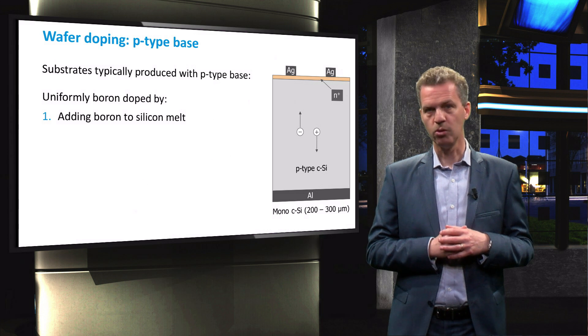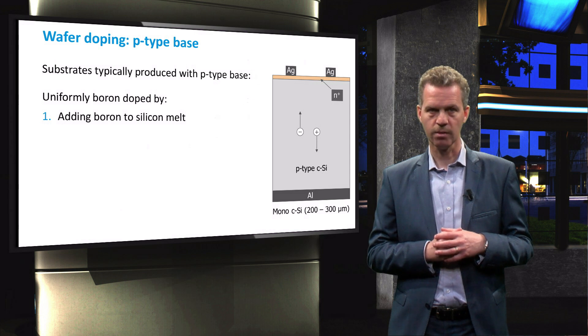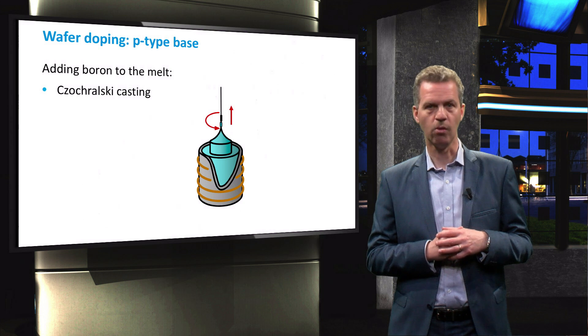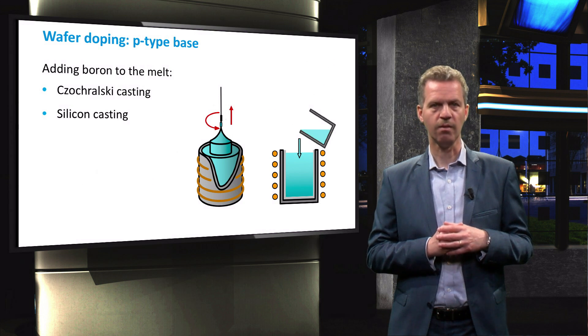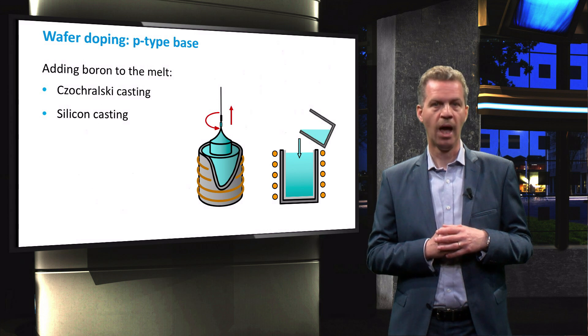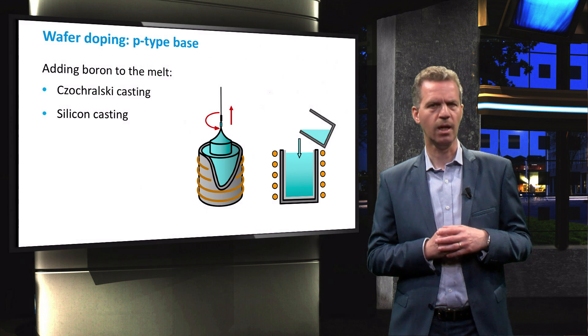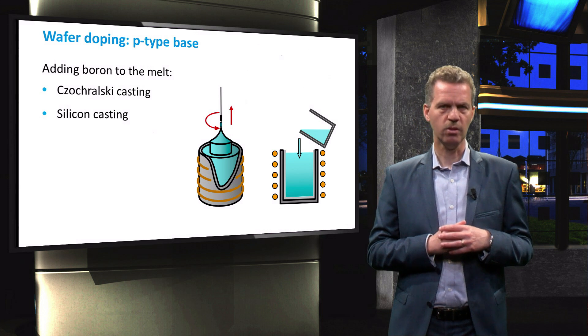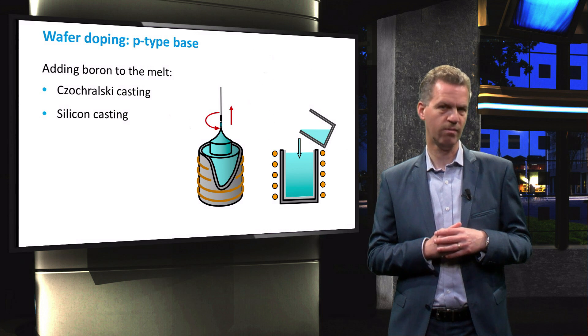P-type wafers can be produced by adding boron atoms to the silicon melt before casting ingots. This method is applicable to Czochralski casting for monocrystalline silicon ingots and silicon casting for multi-crystalline silicon, as these production methods include a molten phase from which these ingots or wafers are cast. Adding the doping atoms to the melt is the most straightforward method to obtain uniformly doped wafers.